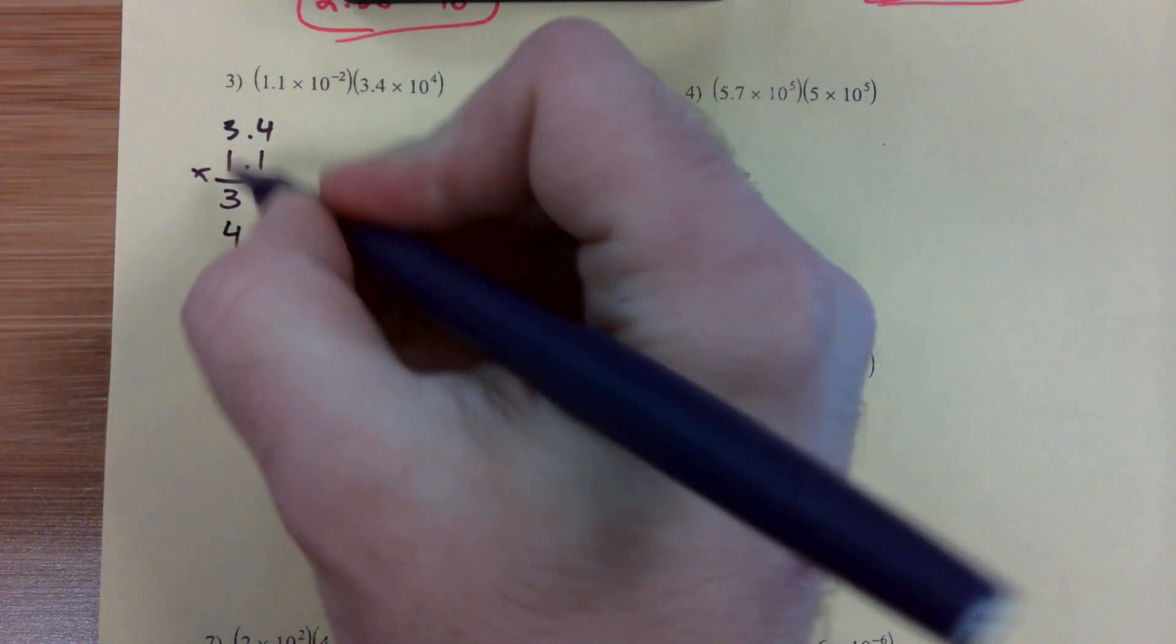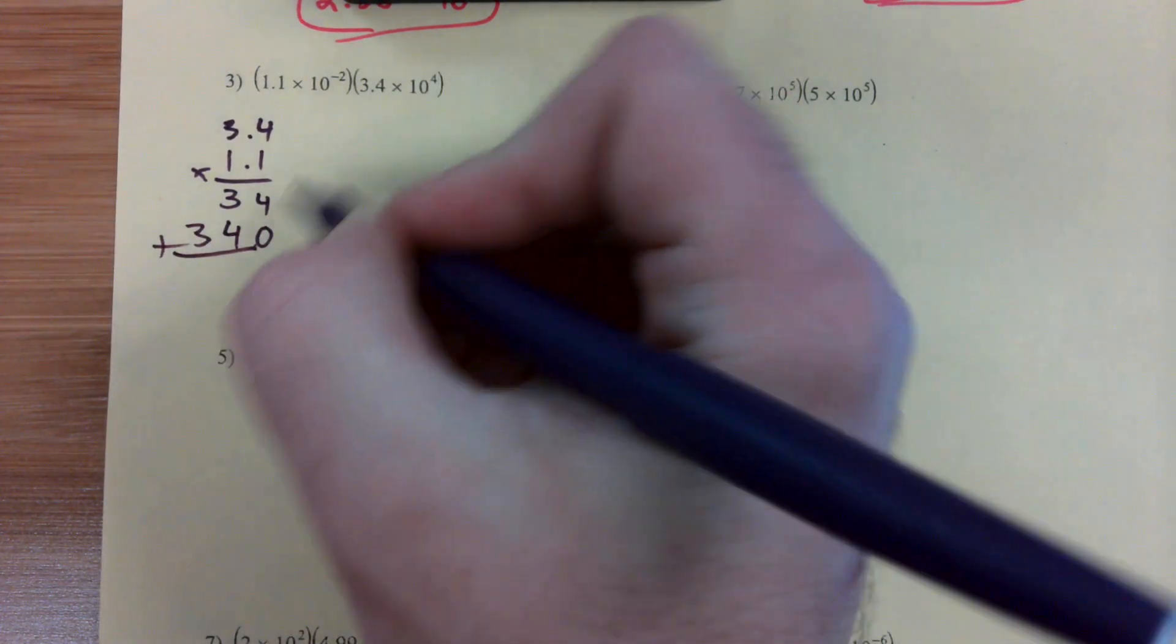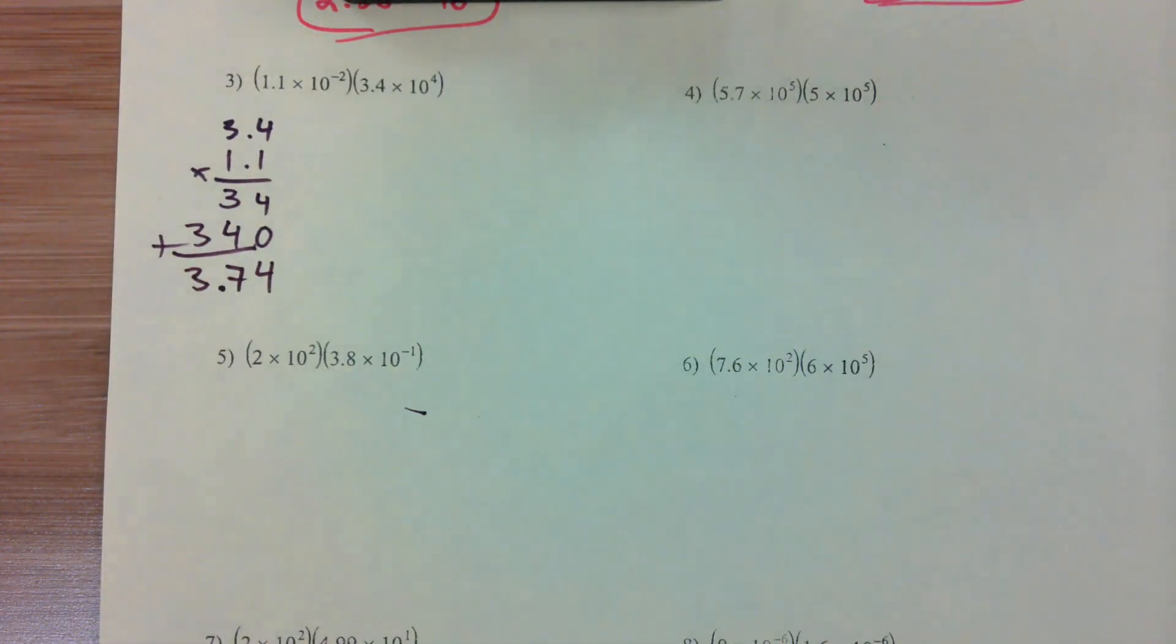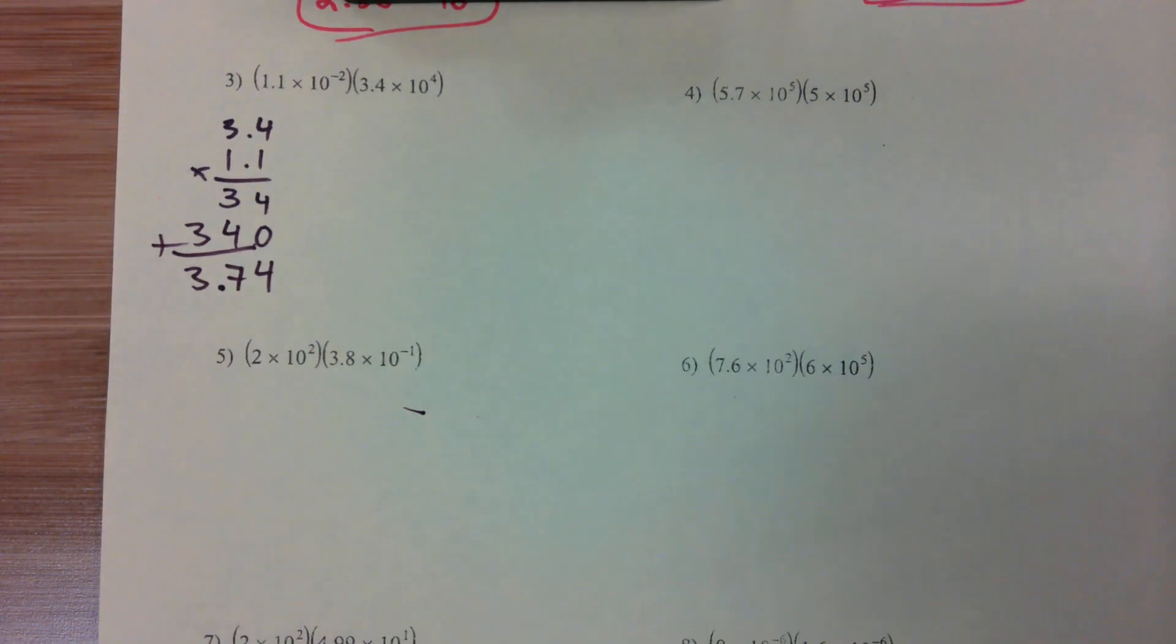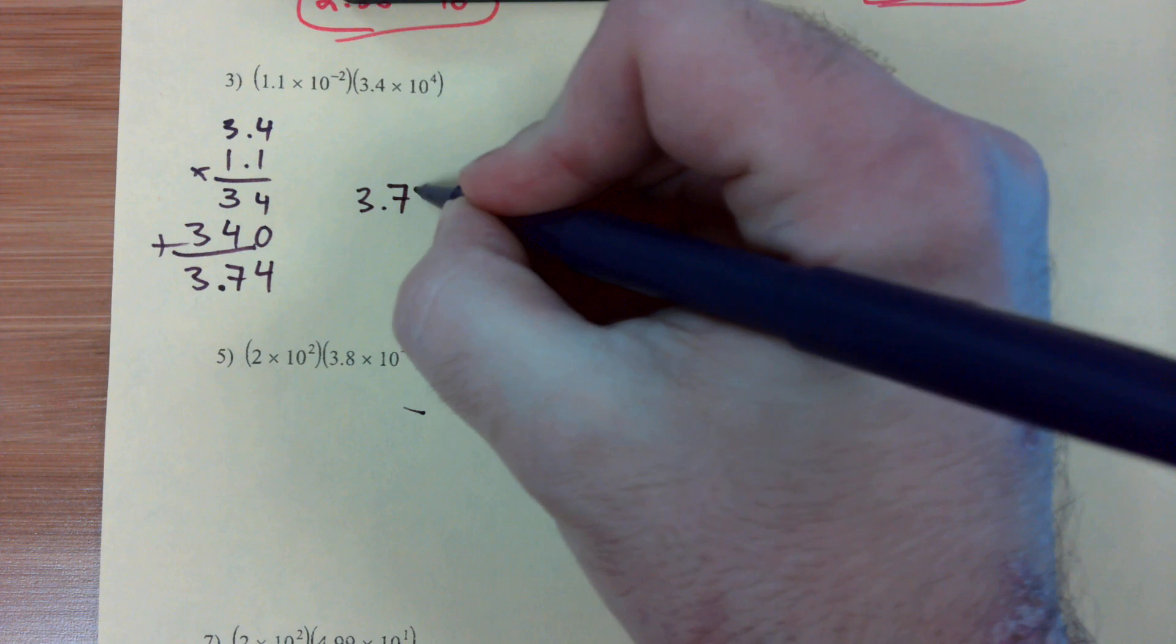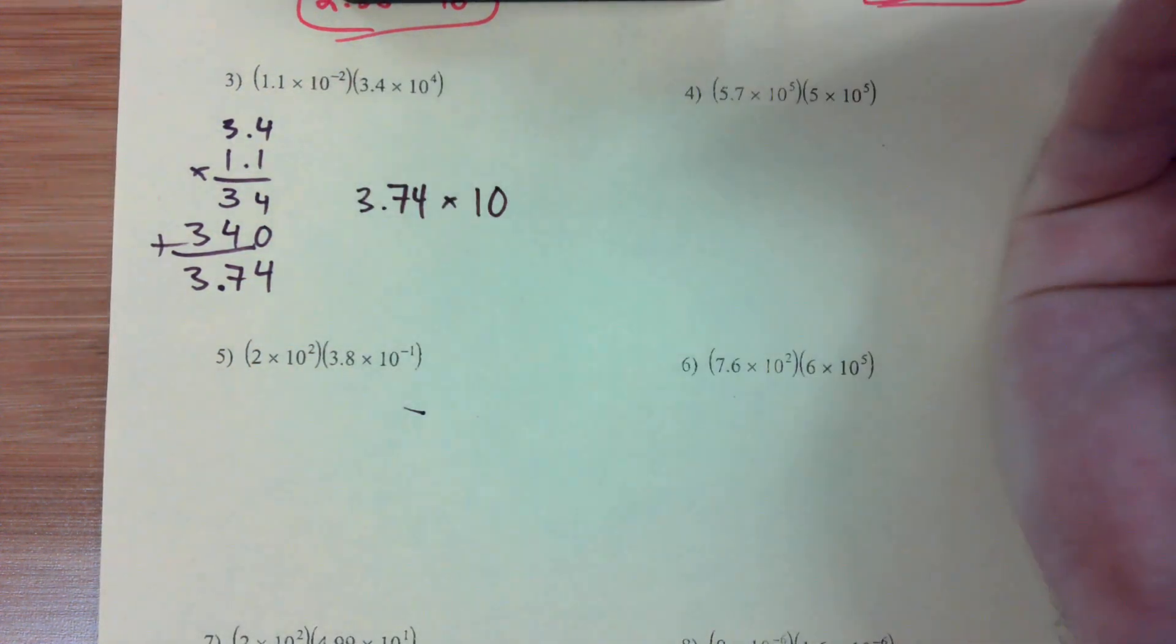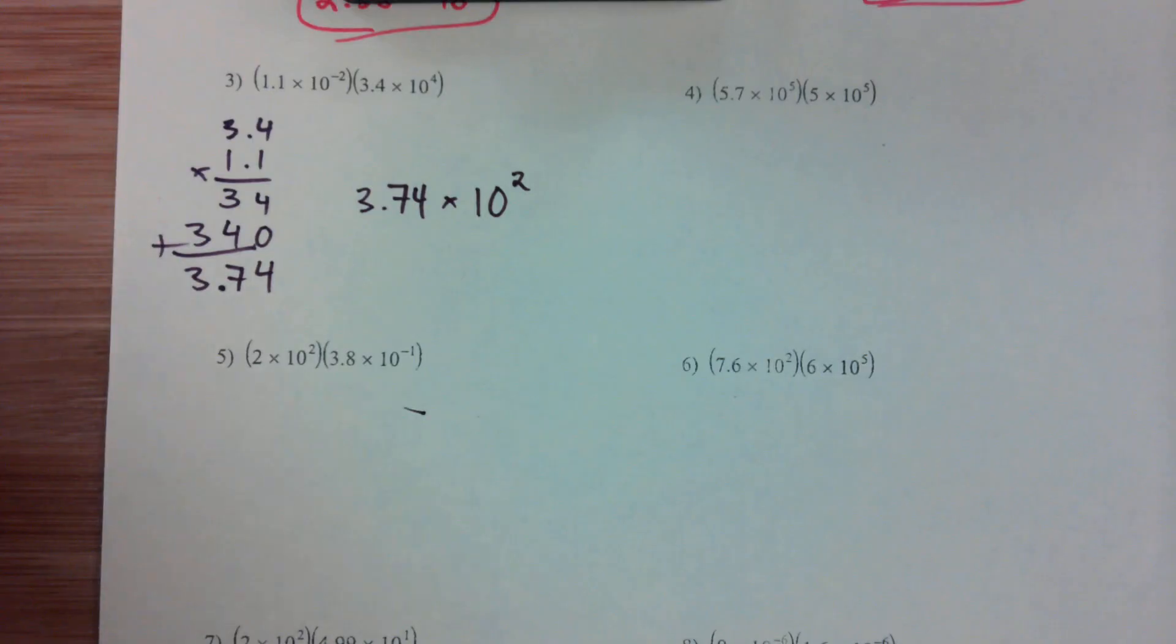1 times 4 is 4, 1 times 3 is 3. Now we have to add them all up. 3, 7, 4 with two decimals. Now this one's nice, we don't have to adjust our decimal at all. 3.74 is the leading number that we want. And then negative 2 plus 4 just gives us positive 2.